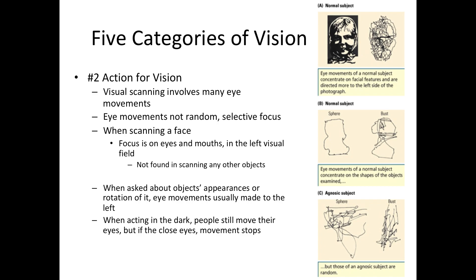An interesting aspect of action for vision is the eye movements we make when we visualize information. When people are asked to mentally rotate objects to answer questions about their appearance, they usually make eye movements especially to the left — a left bias. However, when acting in the dark — for example, searching for a water bottle in your kitchen — these scanning movements stop. It can actually be easier to move in the dark with eyes closed, acting more by touch to feel where objects are.